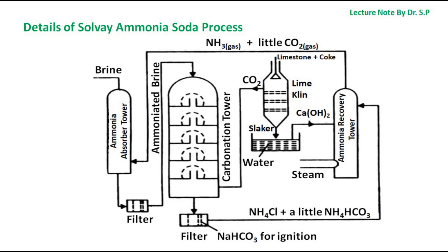In the second step, carbonation of ammoniated brine is carried out. Ammoniated brine is allowed to trickle down a carbonating tower known as the Solvay Tower, which is also fitted with baffle plates. Here, brine is mixed with carbon dioxide gas produced by heating limestone in a separate chamber called a kiln. The baffle plates ensure the flow of solution and break up carbon dioxide into small bubbles to produce good conditions for reaction.